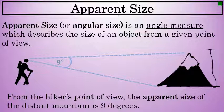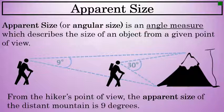For example, if the hiker were closer to the mountain, the apparent size of the mountain would be larger. Here we see the hiker much closer to the mountain, and from his point of view, the apparent size of the mountain has increased to now 30 degrees.